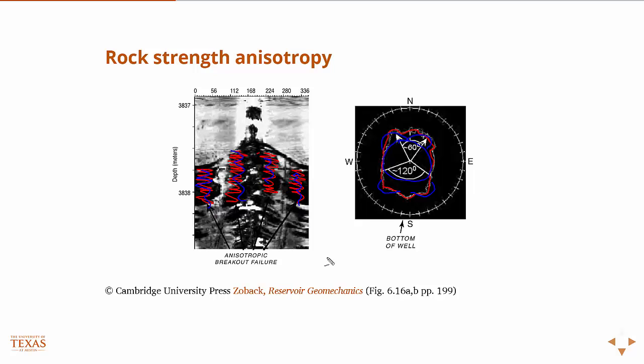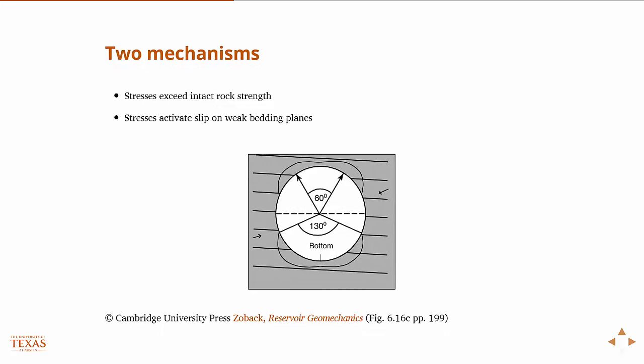And the mechanism for that has to do with, well, there's two mechanisms. One is just the same mechanism as before, that the stresses exceed the intact rock and you get breakouts. And so here, what I've drawn, if you remember, well, not what I've drawn, a figure from Zoback's book. So the lines here are meant to indicate lines of weakness in the bedding plane. In other words, the rock has more strength in this direction than it does along those lines.